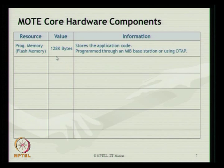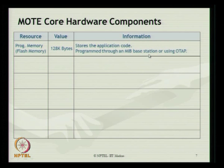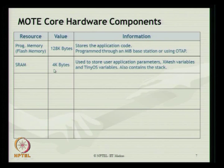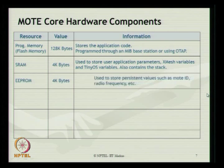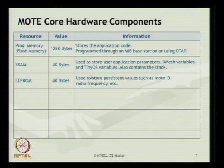The mote has a programmable flash memory of about 120 kilobytes which stores the application code, programmed through an MIB base station or using an OTAP configuration. It has 4 kilobyte SRAM used to store user application parameters, XMesh variables, and TinyOS variables, including a stack connectable to the mote. The EEPROM contains 4 kilobytes used to restore persistent values such as mote ID and radio frequency, which can be used to retrieve the mote configuration in a given network system.